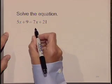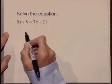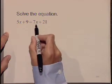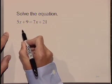Let's solve the equation 5x plus 9 is equal to 7x plus 21. We want to isolate the variable on one side, so let's move the x's to the left by subtracting 7x from both sides of the equation.